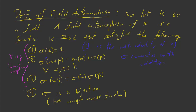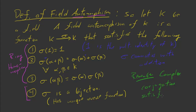The fourth property is where we get the 'auto' in automorphism — sigma is a bijection, meaning it has a unique inverse function. That's what makes it an automorphism: it's invertible. And remember, complex conjugation satisfies all four of these properties, as we said in the last video.